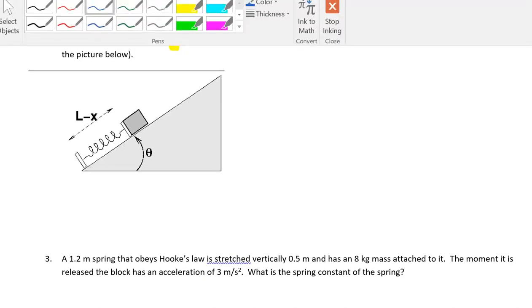So for our next problem, we are going to go ahead and deal with a block. So we have this 2 kilogram block. It's pressed against a spring force of constant 1400 newtons per meter. So again, that is K. The spring and block are at rest at the bottom of a ramp inclined at a 60 degree to the horizontal. Find how much a spring is compressed from its equilibrium length. Ignore the L minus X on the picture below.